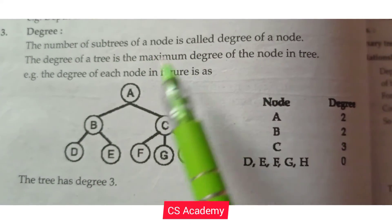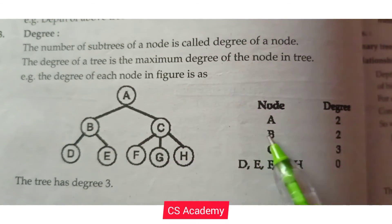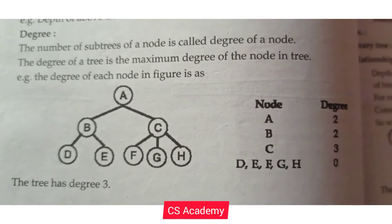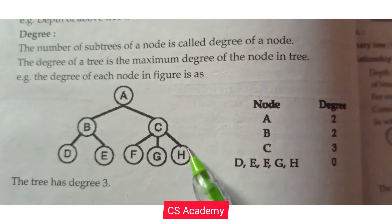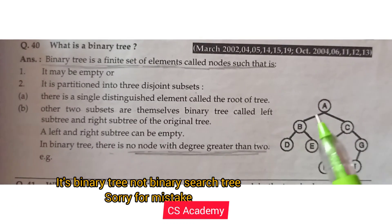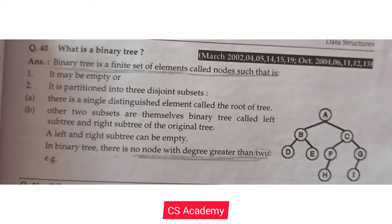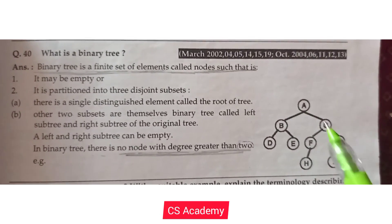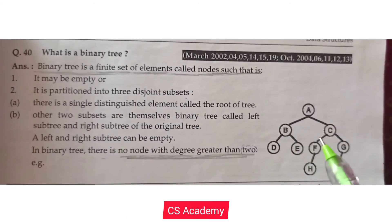Node A has two subtrees, so its degree is 2. Node B also has degree 2, with two subtrees available. Node C has degree 3, since it has three subtrees. However, in a binary tree, every node has degree 2 or less than 2 — no node has a degree greater than 2.